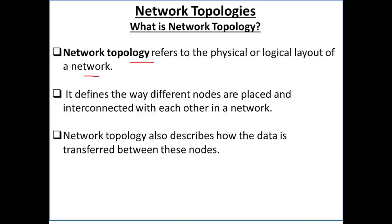Network topology kisi bhi network ke physical or logical layout ko define karta hai. Physical layout ka meaning hai ki network kaisi create kya jayega — network ka architecture kya hoga, devices ko kaise ek-dusre se connect kya jayega, ek network ke andar devices ko kahan rakhha jayega, aur kis medium se — wired ya wireless medium se — connect kya jayega.